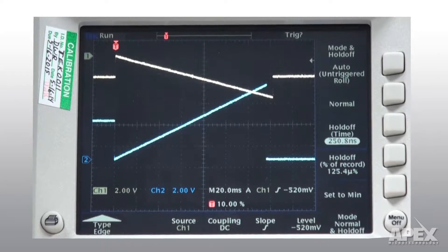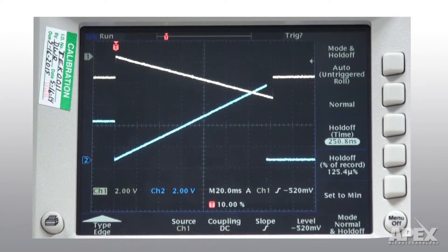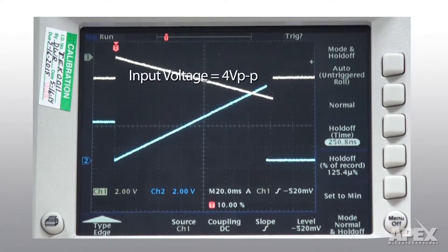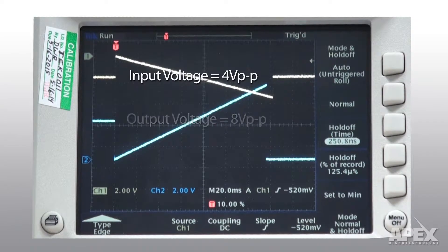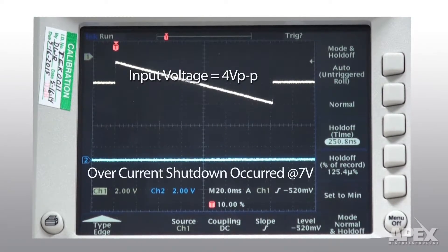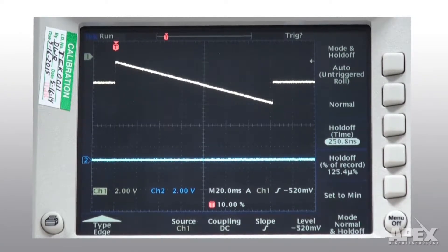Now we see the amplifier operating in over-current condition. The input voltage has been increased to 4 volts peak-to-peak, and the output voltage would be 8 volts peak-to-peak. But when the output reached 7 volts, the amplifier shut down because the load current reached the over-current limit. This shutdown is represented by the blue line, which is the output voltage.